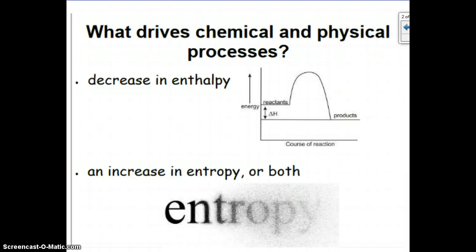So what's going to drive a chemical and physical process? Two things. One is a decrease in enthalpy, and the other is an increase in entropy, or if you have both, that's even better. A decrease in enthalpy is like an exothermic reaction. You have a release in energy, so the products are of lower energy than the reactants. And entropy, well, you don't know what that is yet, but let's find out.